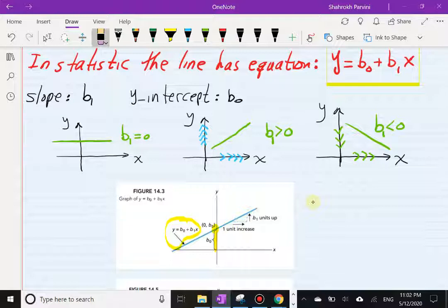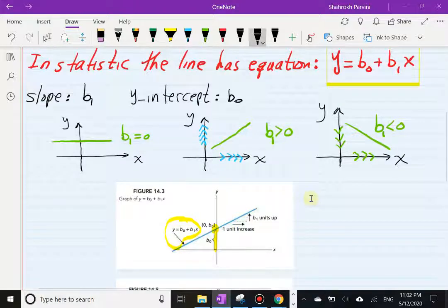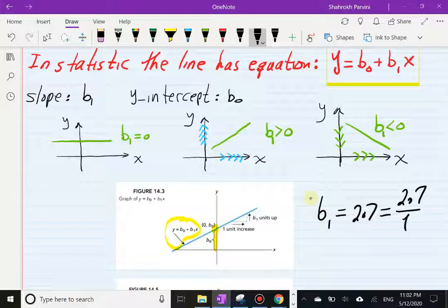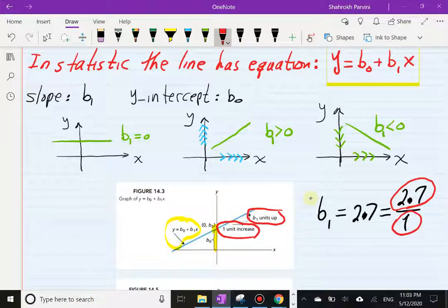Very common in statistics to look at any number, for example let's say I have a number 2.7. Suppose this is my slope. I can write any number as a number divided by one. In our work later on in section 14.2 you will see this. We tend to write all the slopes as a number divided by one. That's why the author has one unit increase, and the change in y is the whole amount of b1.